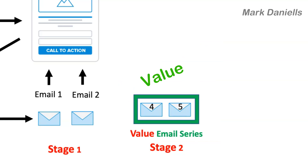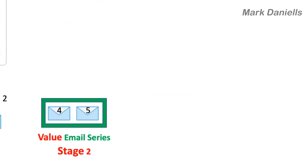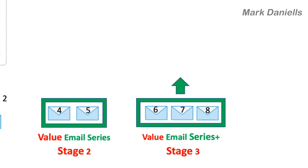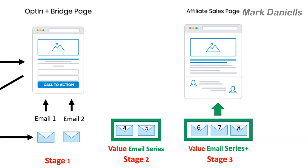Just give them value — people don't like salespeople. Don't even mention sales; just talk about their needs. People only buy from you if they like you and trust you. Stage three is a value email series plus — they're consistent, and I have eight emails total. Do not send more than eight — I'll explain why in a moment. The last three are value emails plus a mention of the solution, so next time they receive an email they won't think you're just trying to sell them.